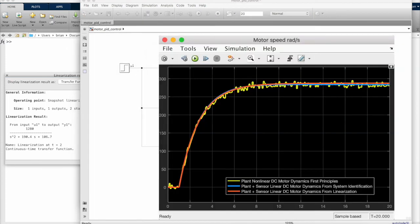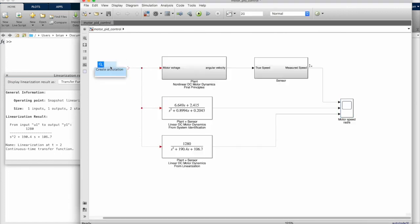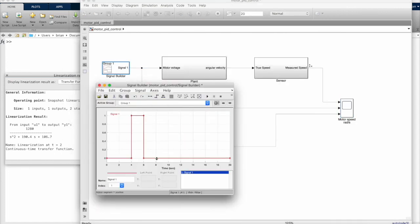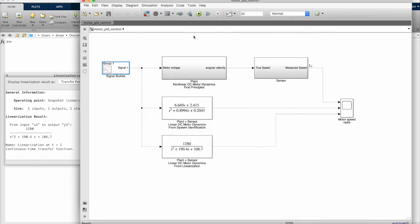Three different models of the same physical system. The first we generated by writing out the equations directly. The second we took input and output data from the model, or the physical hardware, and used system identification to fit that data to a model of our choice. And the third we linearized our non-linear model around an operating point of our choice. These three models all seem pretty different, but you can see that they produce similar results even with an arbitrary input.